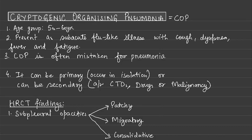In this video we will be discussing Cryptogenic Organizing Pneumonia, COP. First, the clinical features: age group is 50 to 60 years. It presents as a subacute flu-like illness with cough, dyspnea, fever, and fatigue.